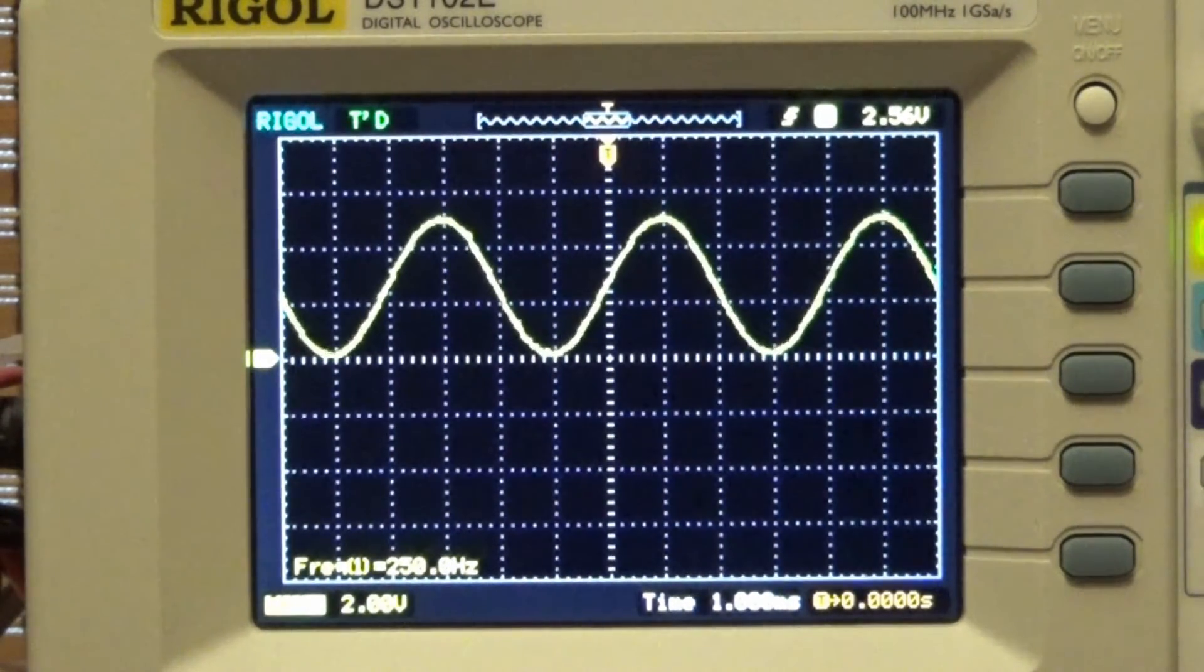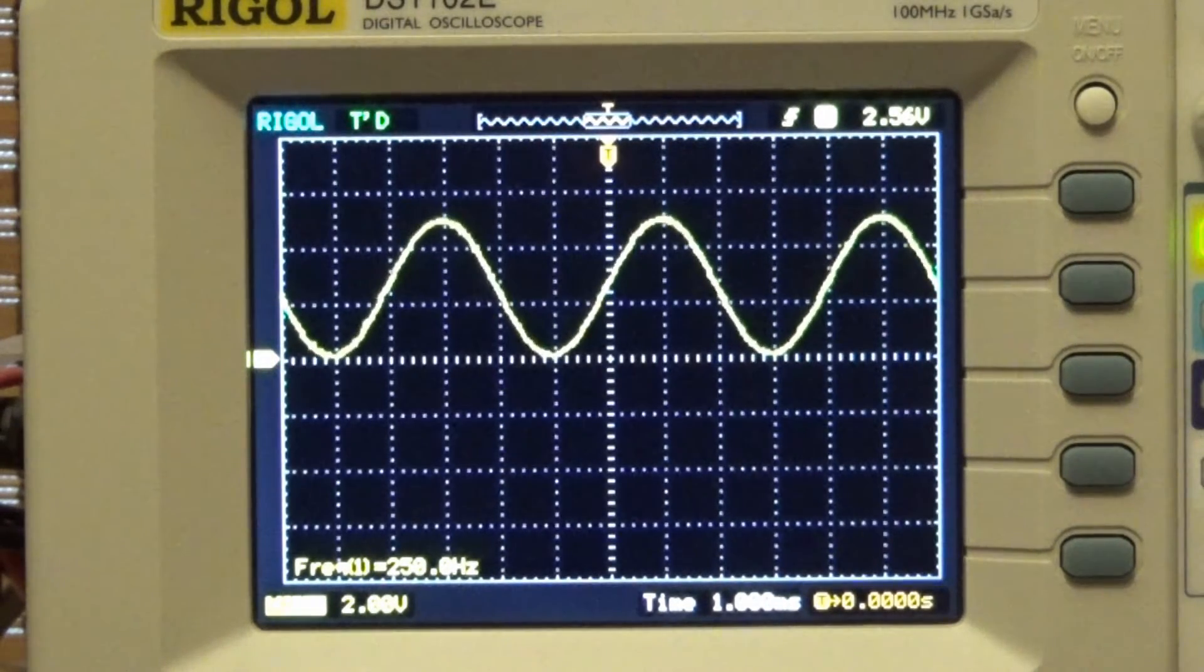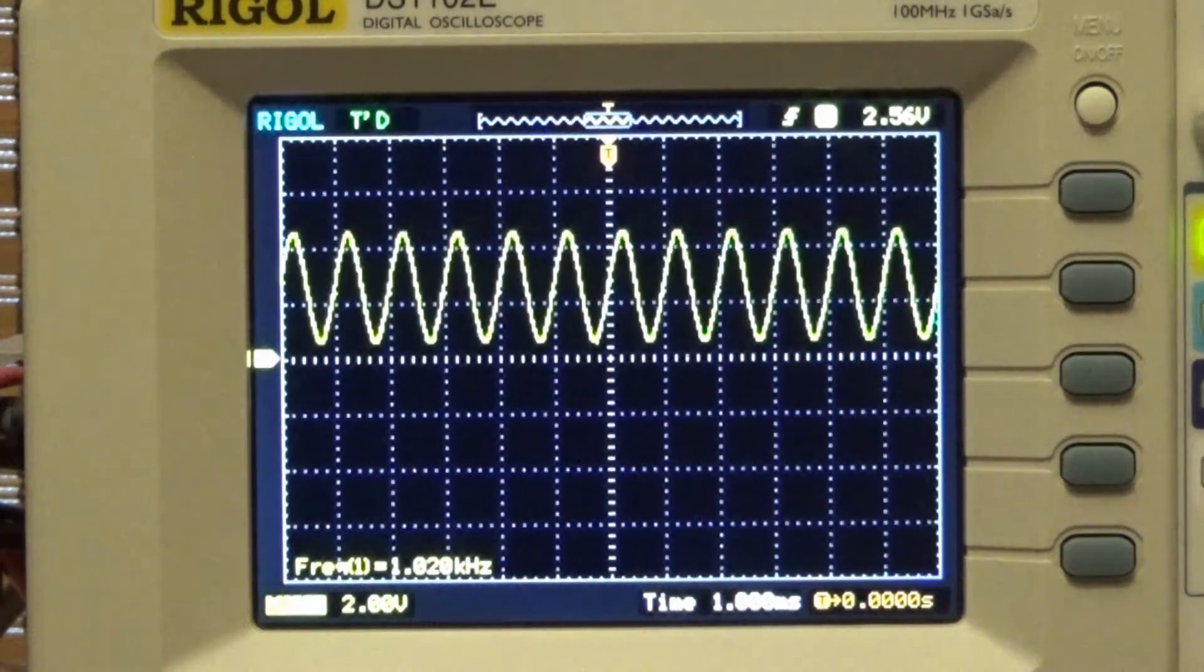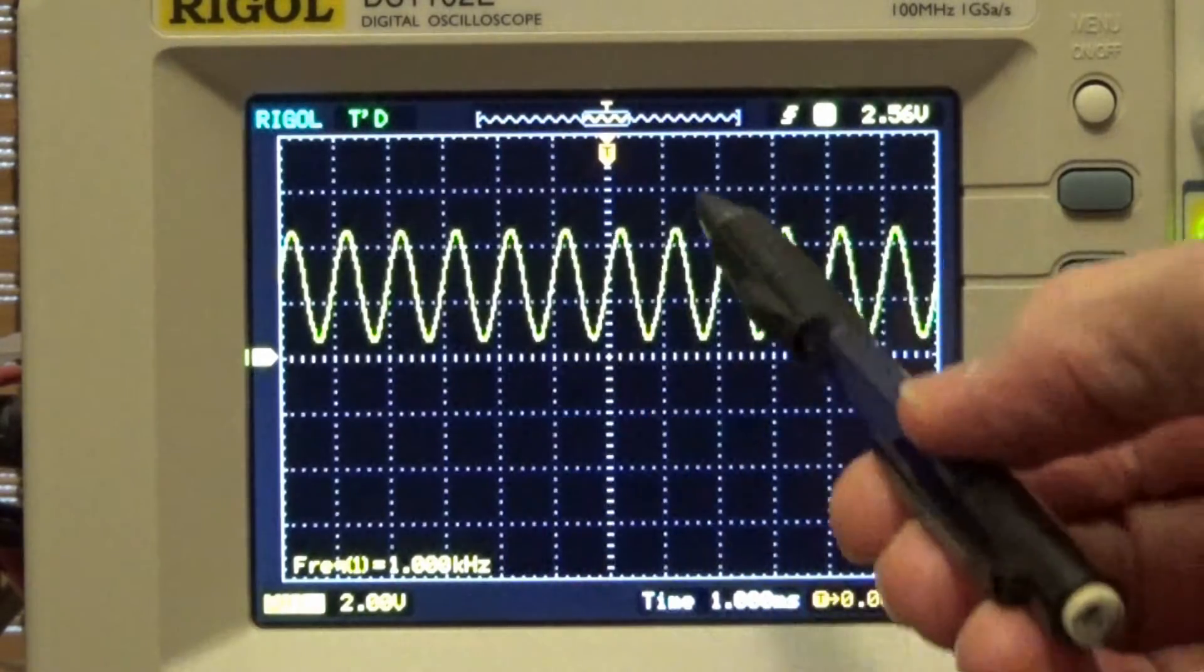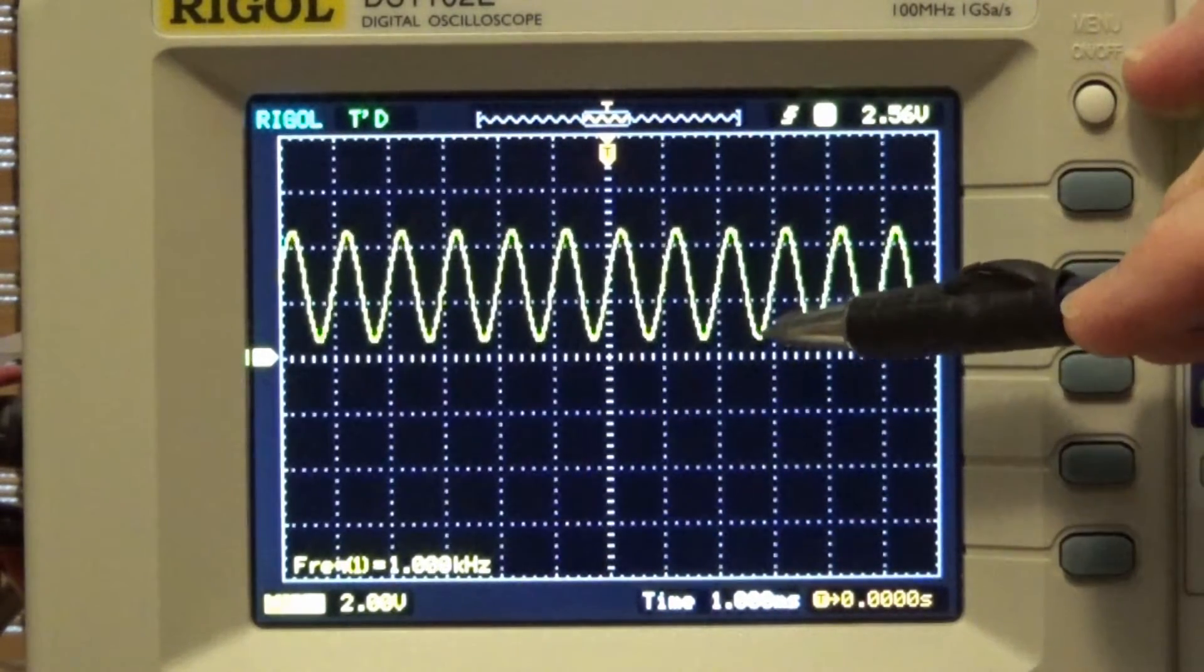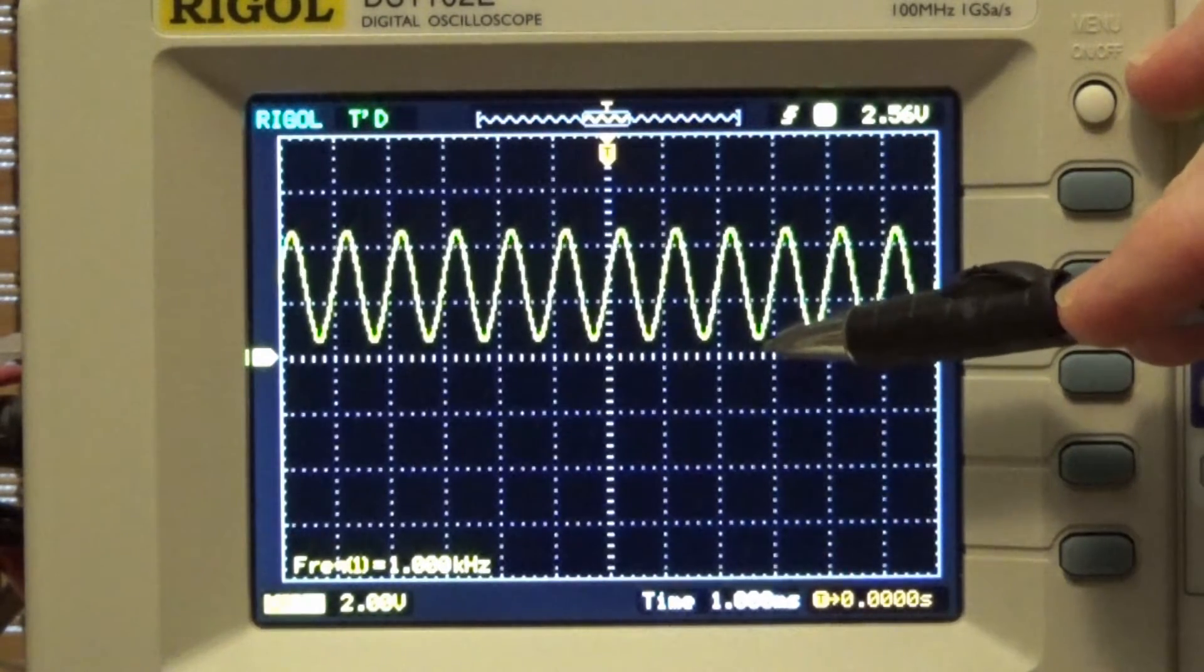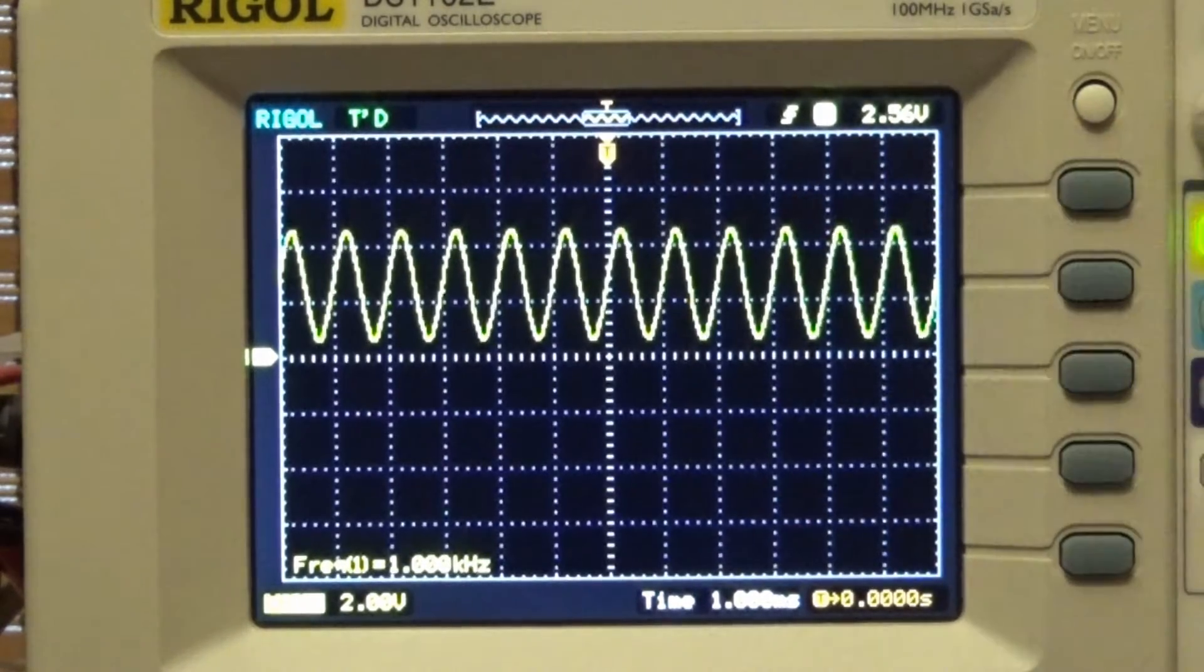But if I were to increase that frequency to say one kilohertz you'll notice a change, obviously the frequency has changed, you got more sine waves across the screen here but what I wanted to point out here is where this lower point of the signal is, it's not at zero anymore whereas the previous one at 250 hertz was and the top here isn't at 5 volts anymore either.